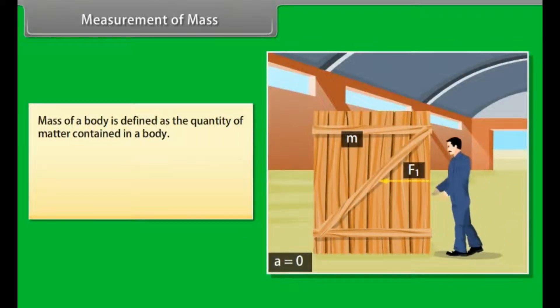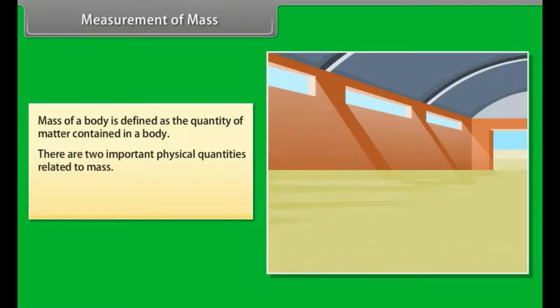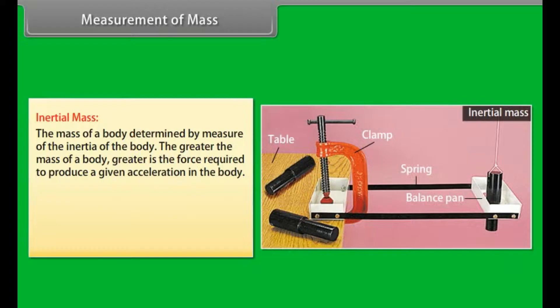Measurement of mass. Mass of a body is defined as the quantity of matter contained in a body. There are two important physical quantities related to mass of a body. These quantities are: inertial mass and gravitational mass.